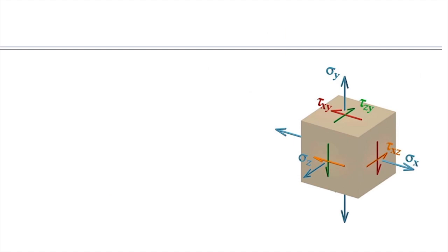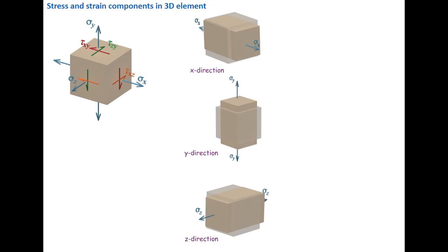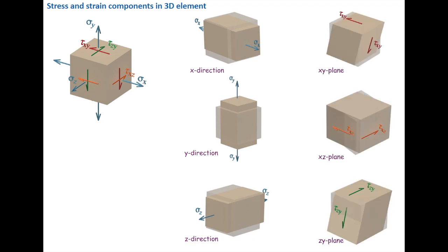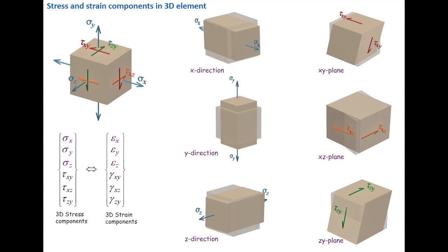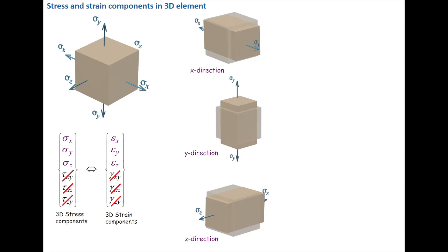Let's consider a general three-dimensional stress element. As you can see here, we have six independent stress components: three normal stresses — sigma x, sigma y, and sigma z — and also three independent shear stresses. I want to find a relationship between six independent stresses and six independent strains. To make it easier, let's consider the case where there is no shear stress, so we just want to talk about normal stresses sigma x, sigma y, and sigma z.